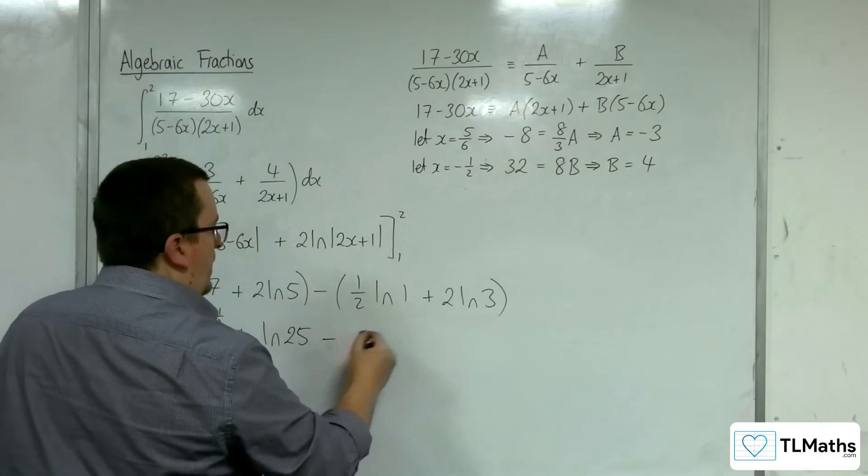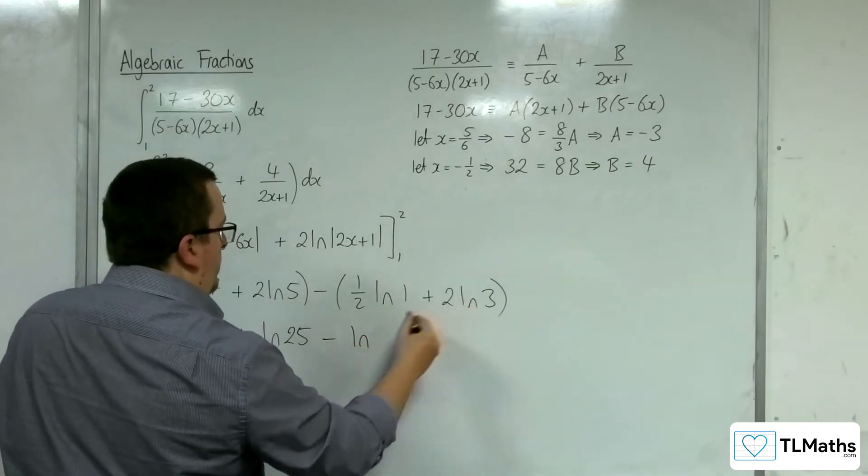Remember, that's 0. Take away log of 3 squared, so 9.